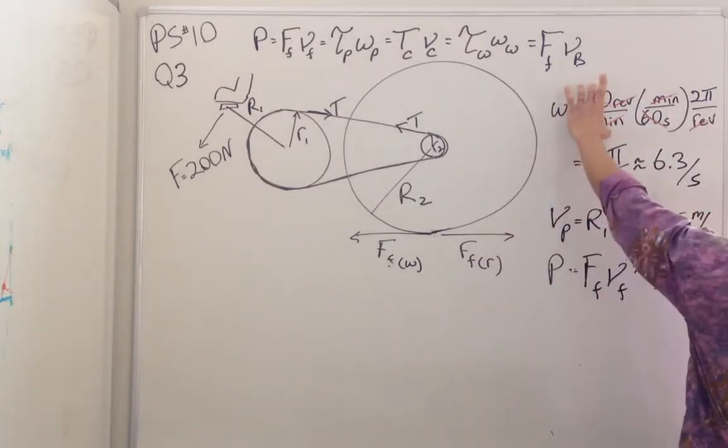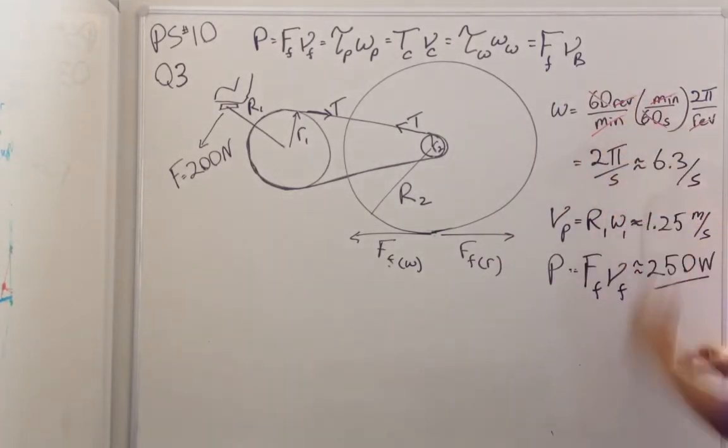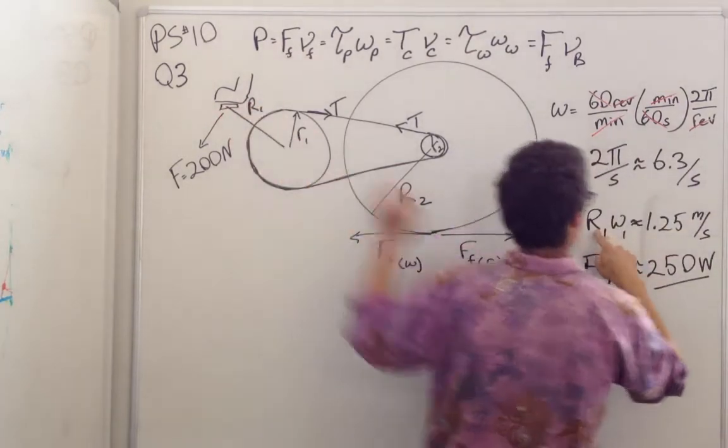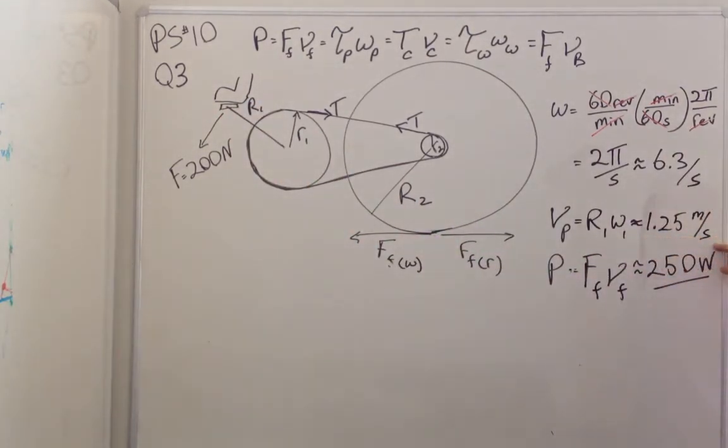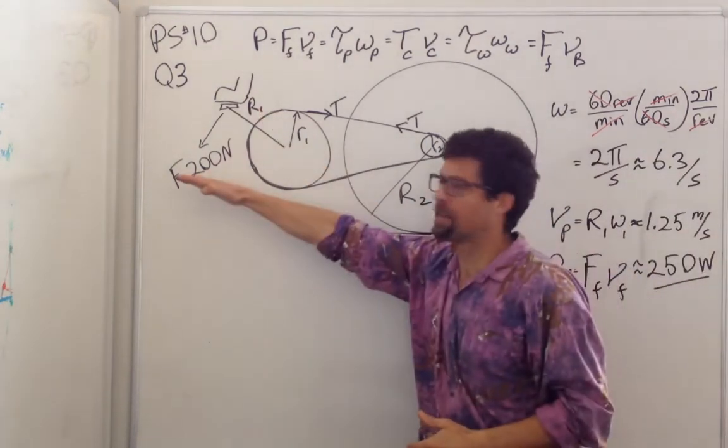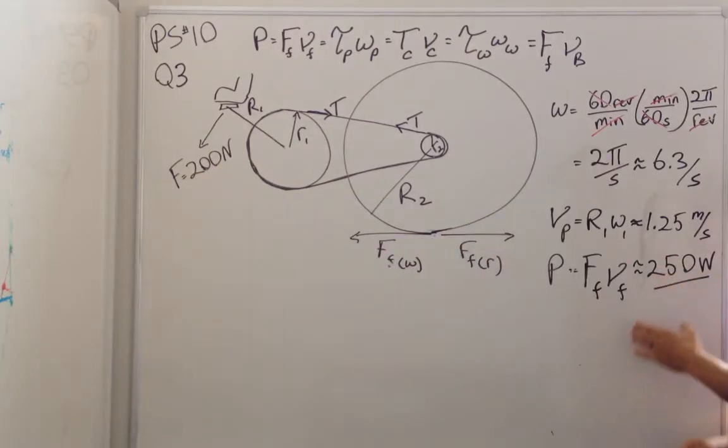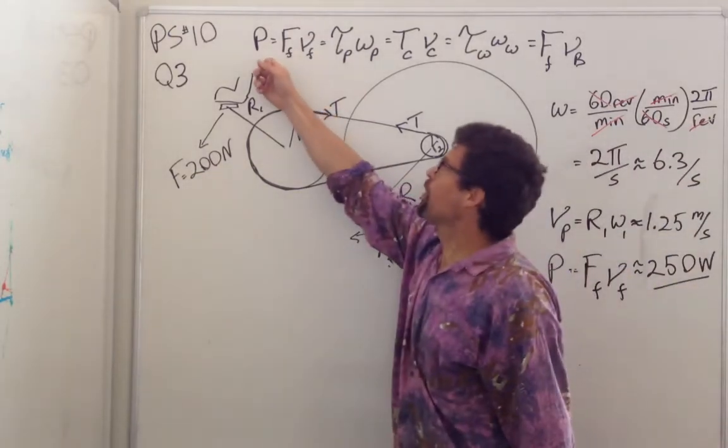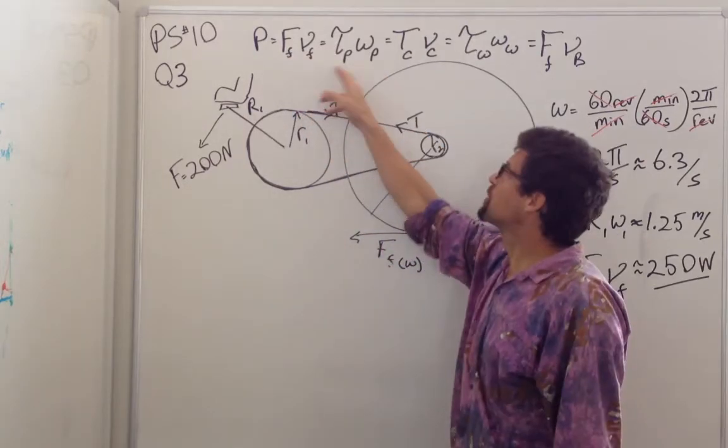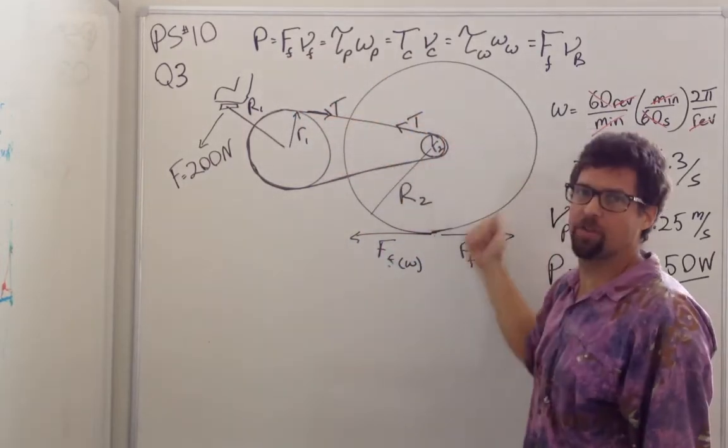Because I give you omega in 60 revolutions per minute, which winds up being 1 revolution per second or about 6.3 radians per second. And then I multiply it by the radius of the pedal, and I find that my foot is moving about one and a quarter meters per second. And I multiply that by the force that I'm pushing on the pedal with, and I get 250 watts. So that's the power that I put into the pedals is equal to the power at every step of the transmission.